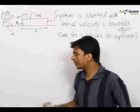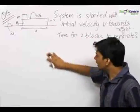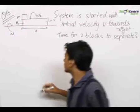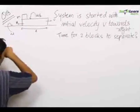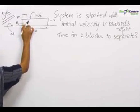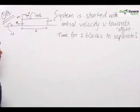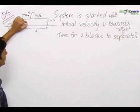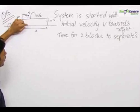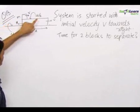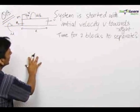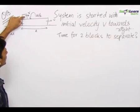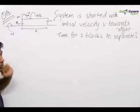This question is a bit difficult, but if you solve it keeping in mind the small things, you will get the right answer. In this question, both blocks have been given an initial velocity v in the right direction. The frictional coefficient between the two blocks is mu/2, and the frictional coefficient between the lower block and the ground is mu. We need to find out the time before the two blocks separate, knowing that frictional forces act between both surfaces.